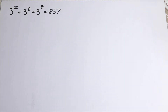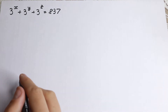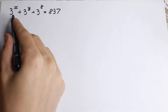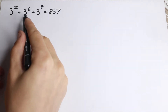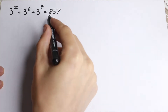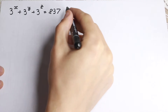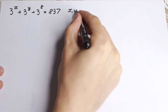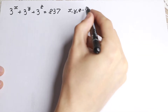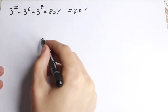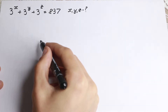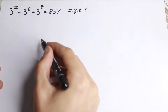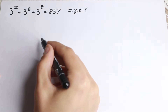Hello everyone! Welcome back to Higher Mathematics. Really interesting problem today: we have 3 to the x plus 3 to the y plus 3 to the z equal to 837, and we need to find x, y, and z. I want to show you a really good approach, step by step. I hope you will understand my explanation.